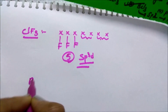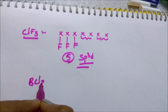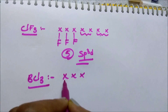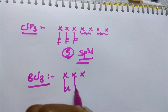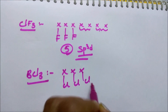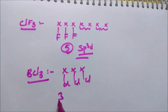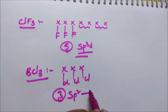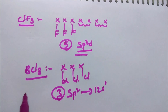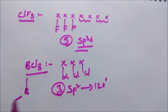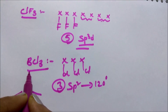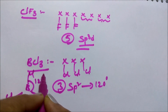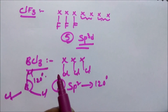SP2 hybridization means the bond angle is 120 degrees, so BCl3 is the answer. For BCl3: boron has 3 valence electrons, each chlorine is monovalent, giving 3 bonds total — that is SP2. With boron at the center and 3 chlorines arranged around it, the bond angle is 120 degrees.